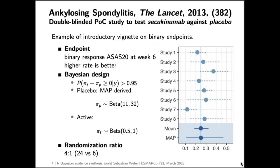I will discuss the example of the introductory vignette on a binary endpoint in the indication of ankylosing spondylitis, published in the Lancet in 2013. This was a Novartis-sponsored trial — a double-blinded proof-of-concept study to test secukinumab against placebo.